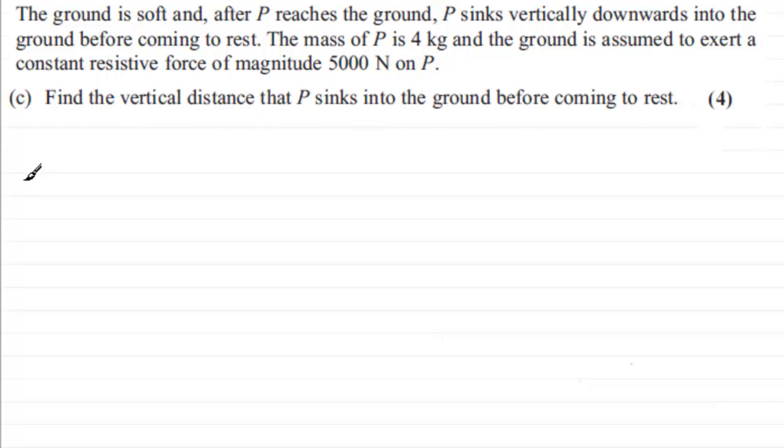Well first of all what I'd want to do is just sketch a diagram to give me an idea of what's going on. So I've got the ground here and we know that P hits the ground, we're told in the earlier part of the question, with a speed of 28 meters per second. So it starts at this point at 28 meters per second. And then it's going to travel through the ground, slowing down as it goes. So there's our particle P, and it's going to decelerate as it goes through the ground, eventually coming to rest at this point down here, zero meters per second. And during this interval it's travelled a distance which we're going to call S meters.